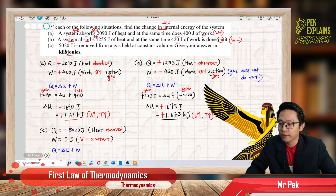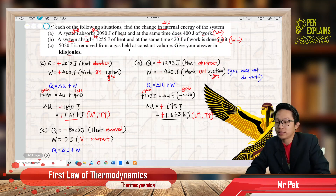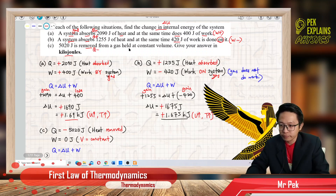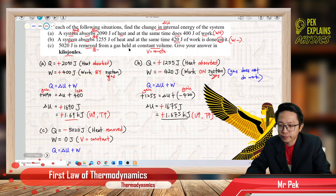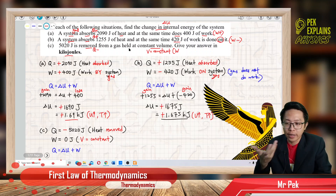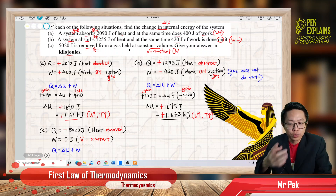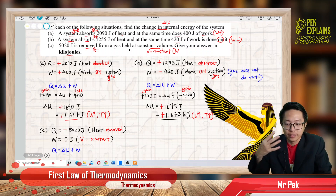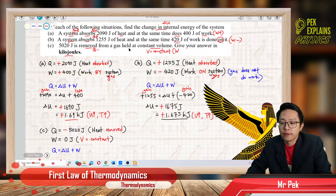Now the last one, C. 5020 joule is removed from a gas. Energy removed from the gas means heat loss or heat released — so Q is negative. And it says the process is held at constant volume. Constant volume means no expansion and no compression, so the gas cannot do any work and no work is done on the system either. Therefore, work done is zero.